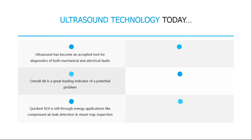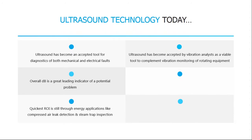Our quickest return on investment is still through energy applications like compressed air and gas leak detection and steam trap inspection. When we're out in plants and facilities, it's pretty typical that within a few minutes or a few hours we can find and document enough compressed air leaks to more than pay for the cost of the equipment. The most widely used application is compressed air and gas leak detection, simply because it shows the quickest return on investment.